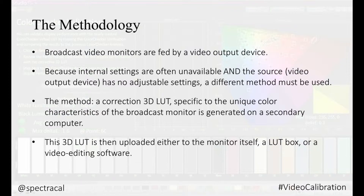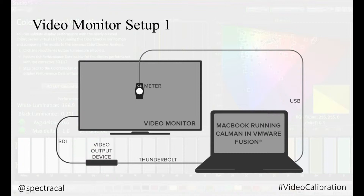This 3D LUT is then uploaded either into the monitor itself, an external LUT box in the source path, or a video editing software program such as Blackmagic Design DaVinci Resolve or Assimilate Scratch. Here is a basic configuration for a smaller studio: they have a Mac running VMware Fusion with Windows and CalMAN, and VirtualForge generating the patterns out of the output device from the Mac operating system, or you could be using the Resolve or Scratch CalMAN plugin to generate these patterns.